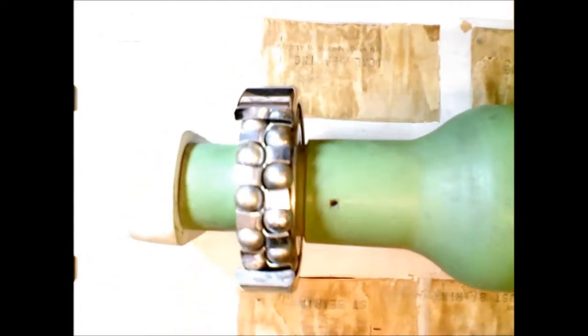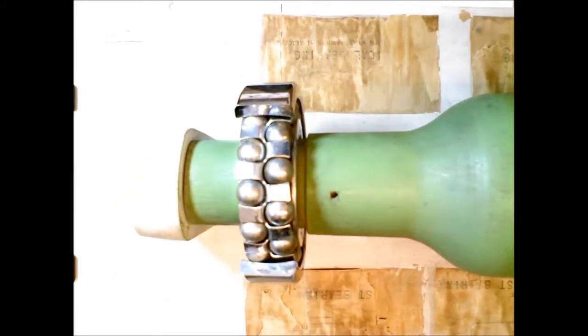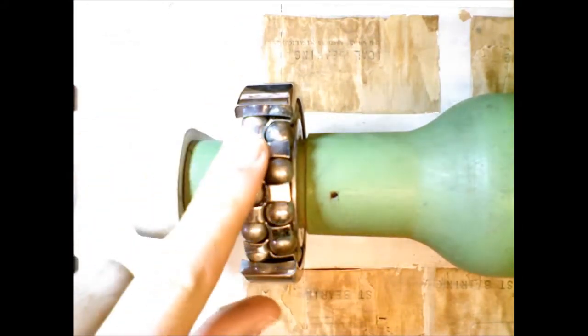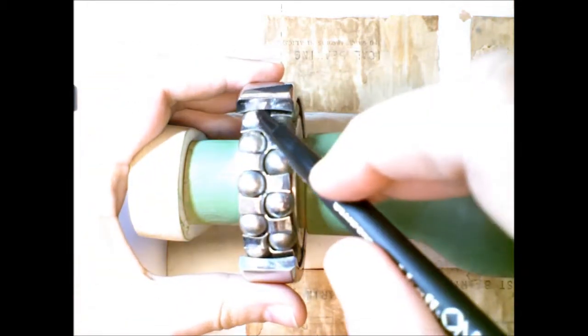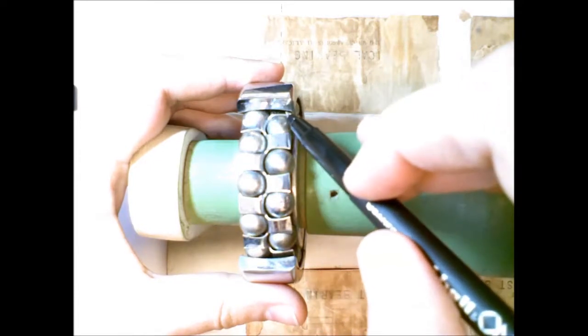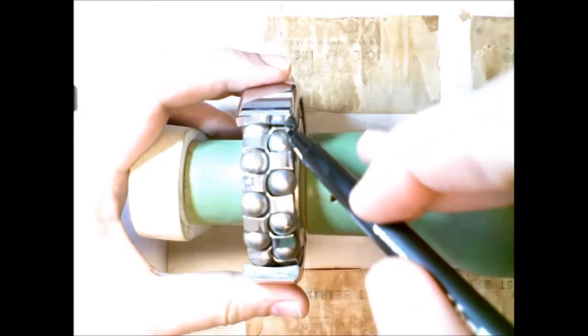Here I have several other examples of bearings. Here we have a double row ball bearing. And if we look at the surface of the inner race, we can see this looks like it's a self-aligning bearing.